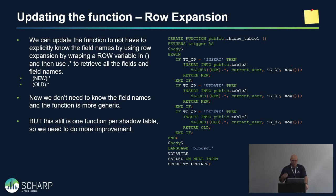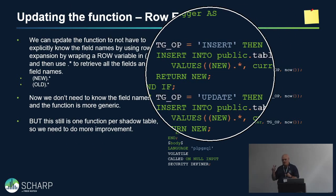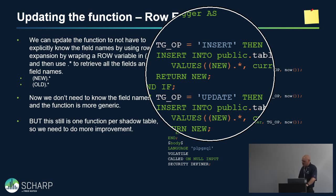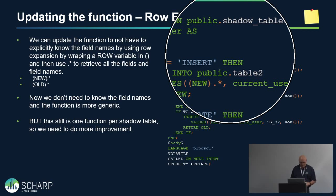Now we want to improve the shadow function. We can do row expansion: wrap NEW in parentheses dot-asterisk — (NEW).* — which does automatic row expansion so we don't have to name every individual field. This makes the function work for any table; it becomes a universal function. You can do the same for OLD in the delete section. But it's still one function per shadow table because we're naming the shadow table in the code.